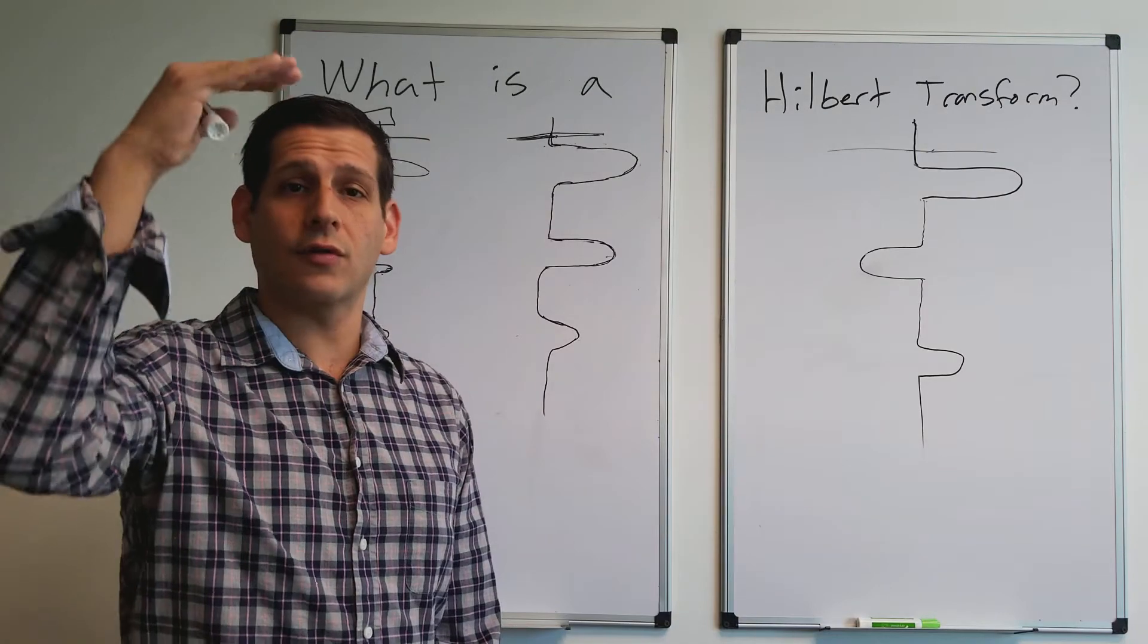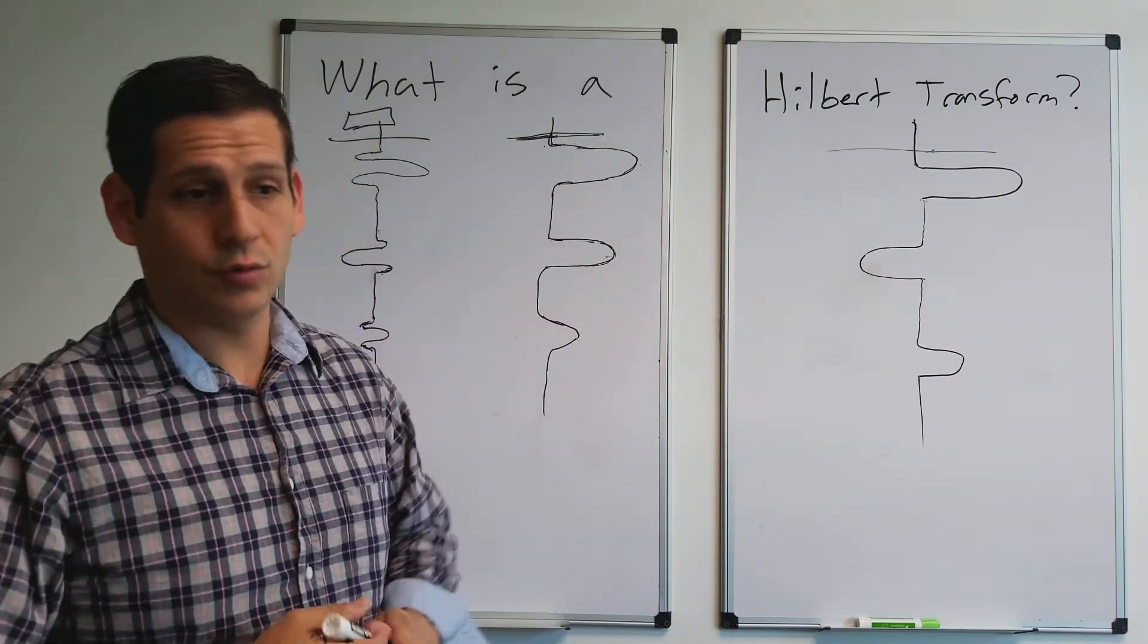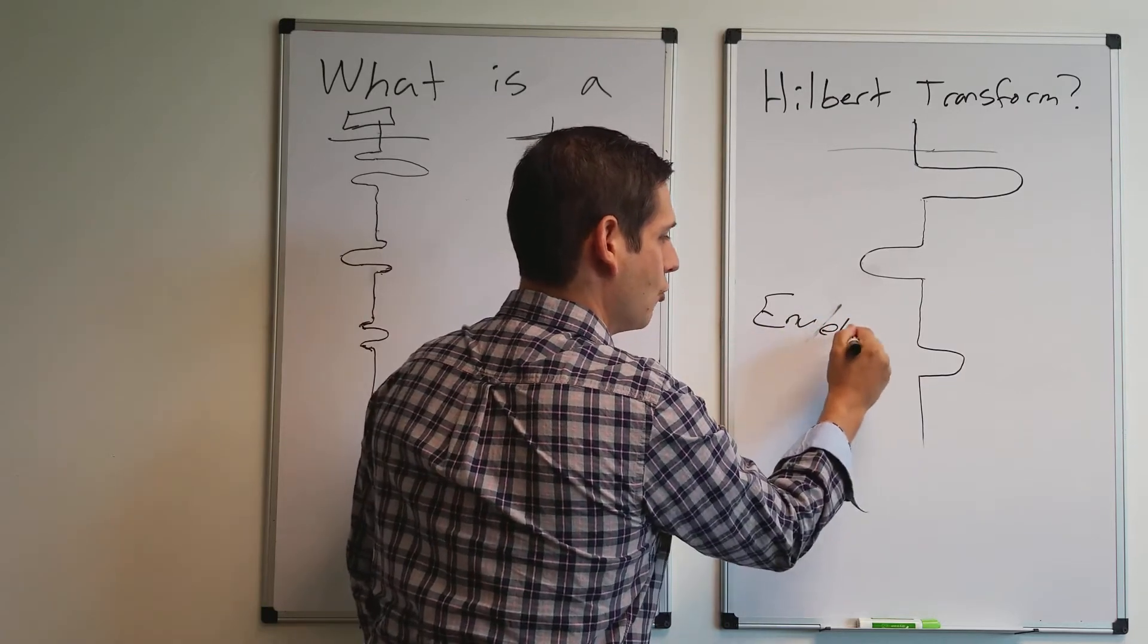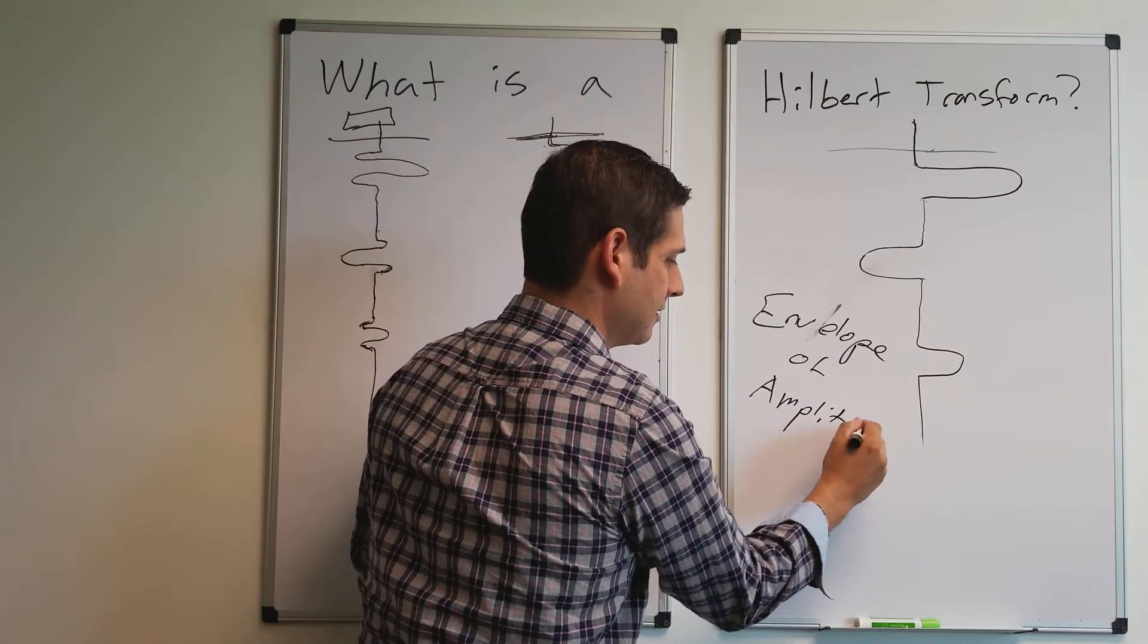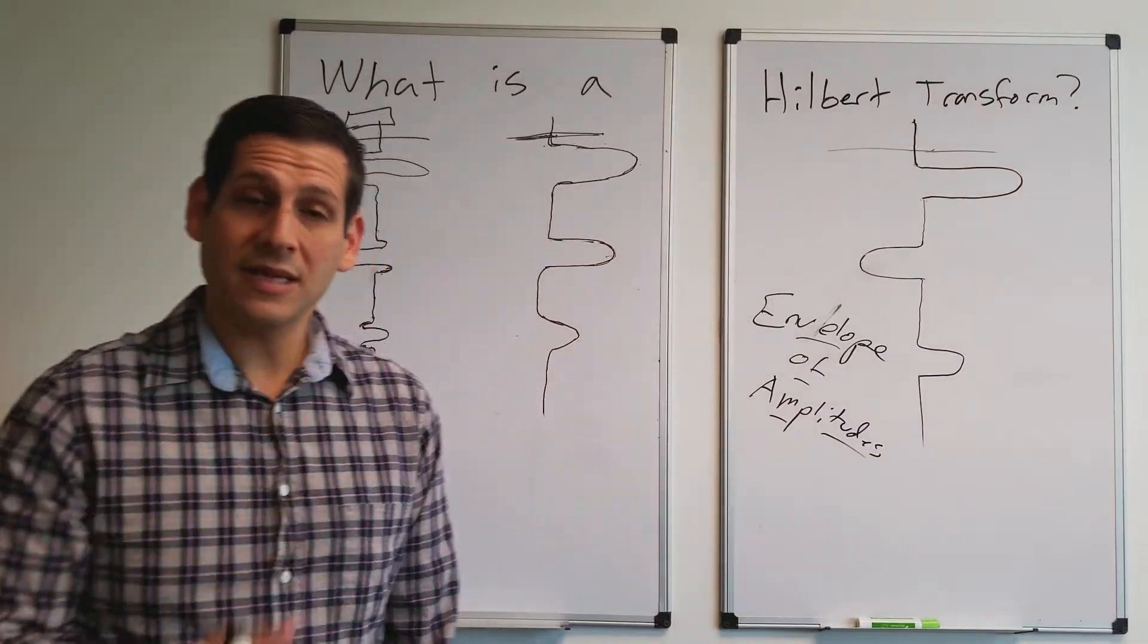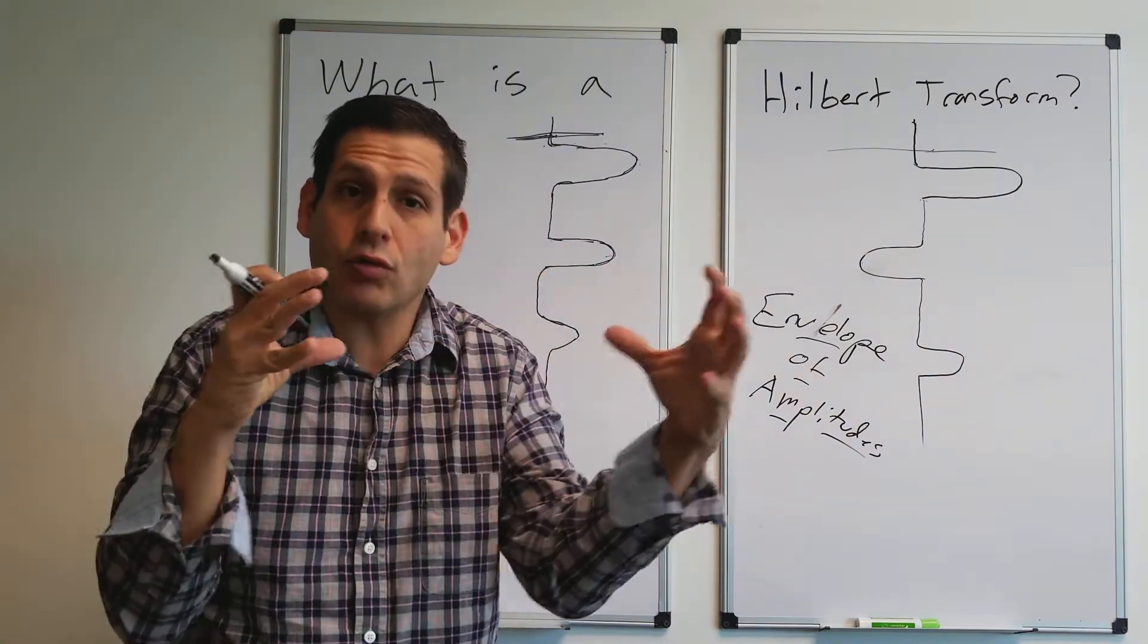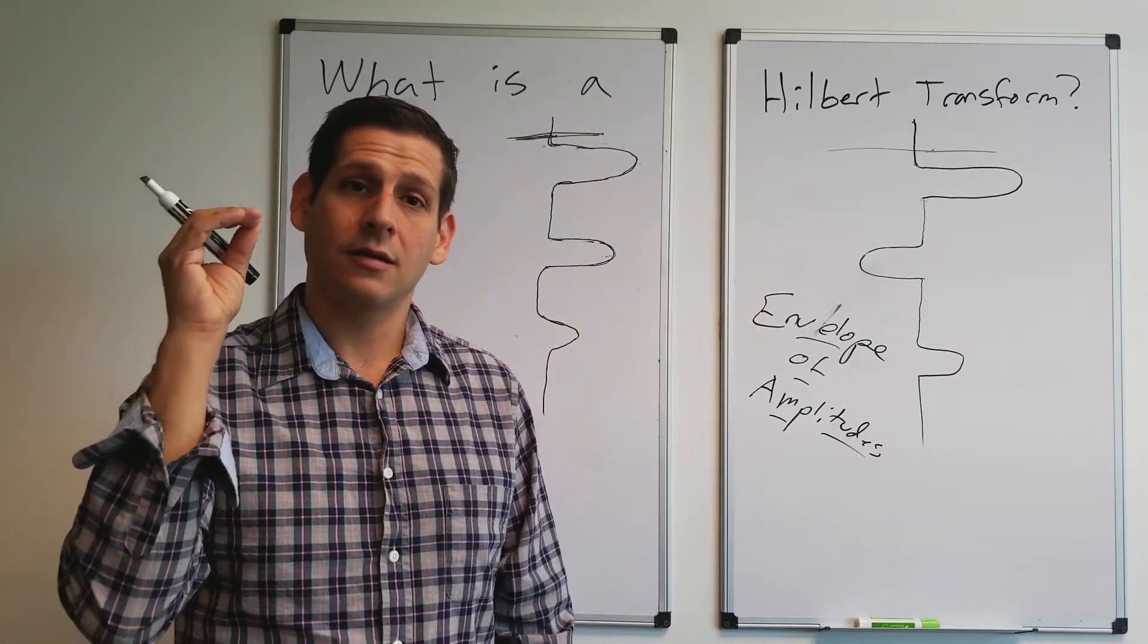A Hilbert transform is a higher-order post-processing step that gives you what's called an envelope of amplitudes. So what does that mean? It means it takes the positives and negatives from a response, from a reflection response, and collapses them into a total signal that shows the entire amplitude of that event.